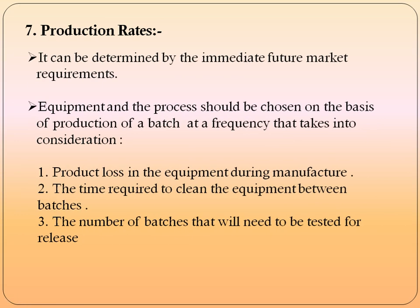Production rate can be determined by intermediate and future market requirements. Equipment and processes should be chosen considering: product loss in equipment during manufacturing, the time required to clean equipment between batches, and the number of batches that will need to be tested for release. All three factors affect the production rate.